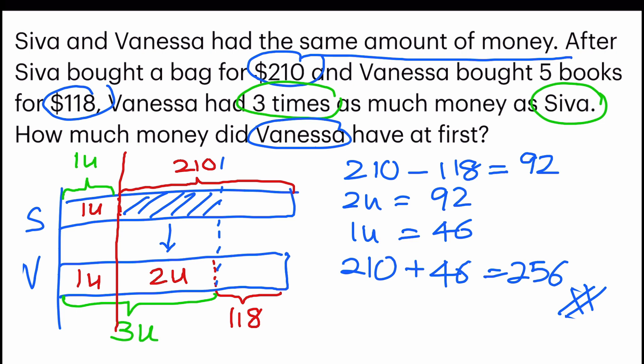So learn how to draw the model, and most importantly, find the difference and link it to the units. Eventually find out one unit and you can solve the question. This method is called the unitary method.